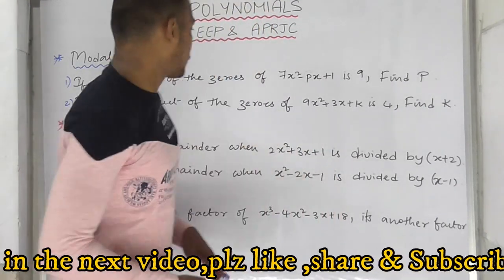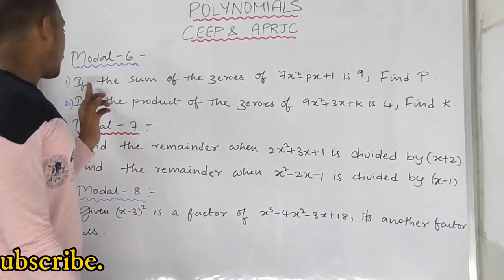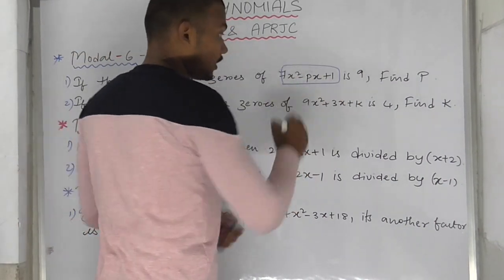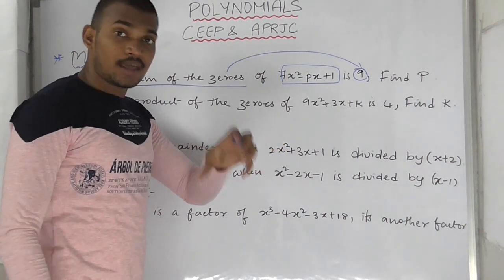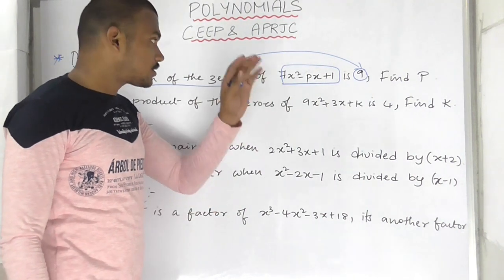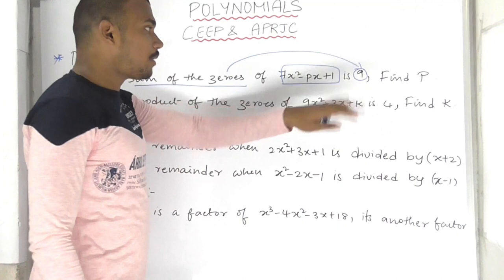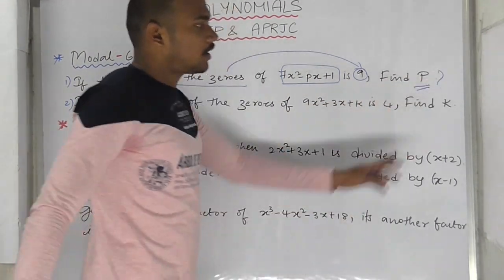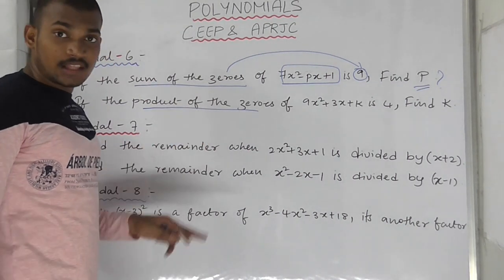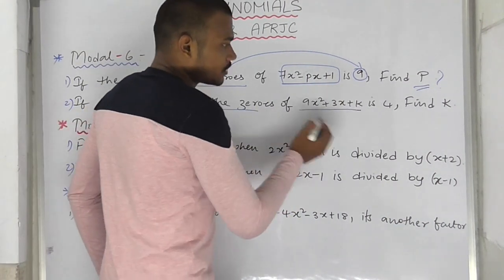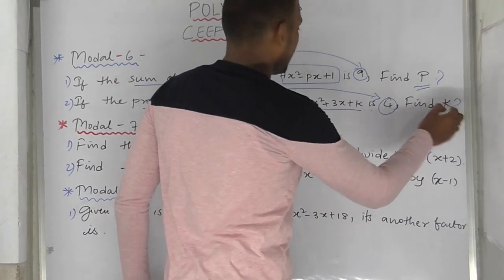Now model number 6: if the sum of the zeros of the quadratic polynomial is 9, find the value of P. Sum of zeros is alpha plus beta, product of zeros is alpha times beta. For example, alpha equals 4. Find the value of P and K.